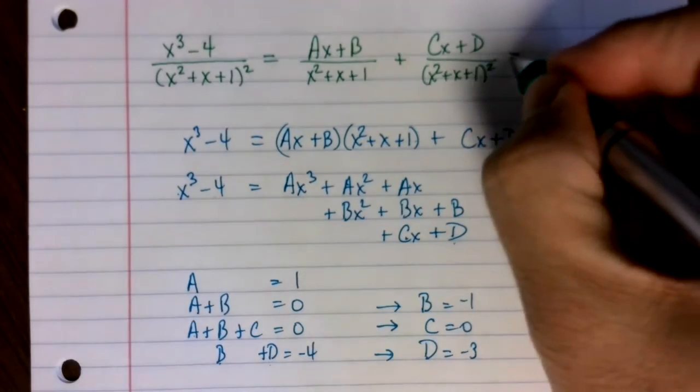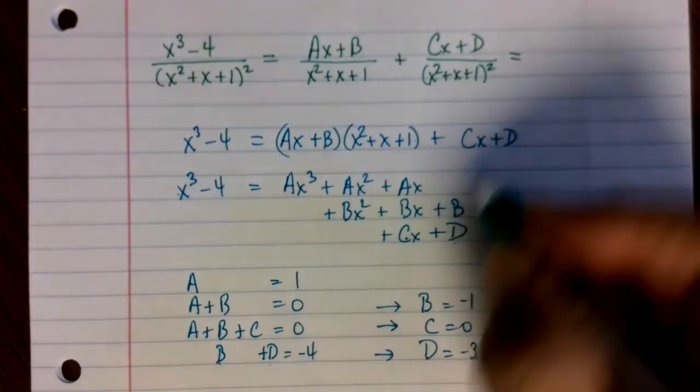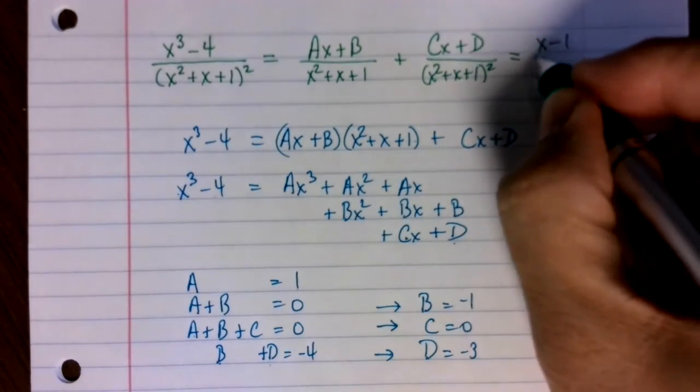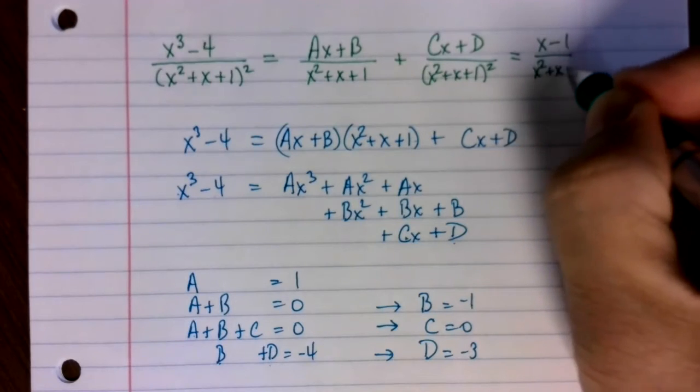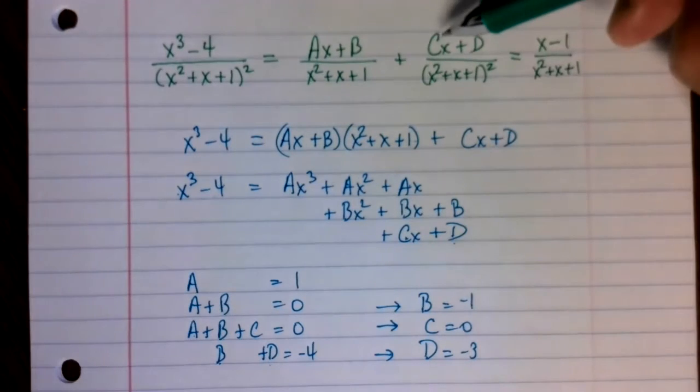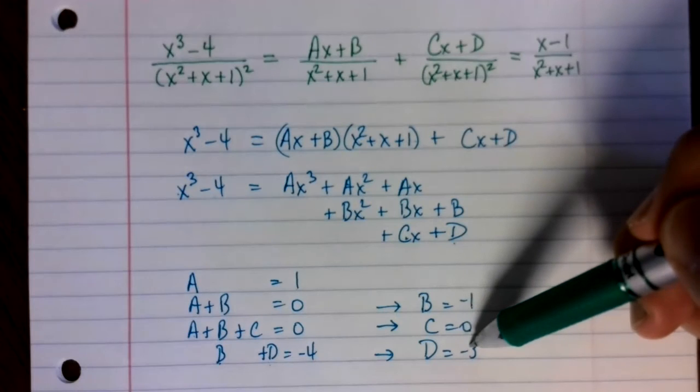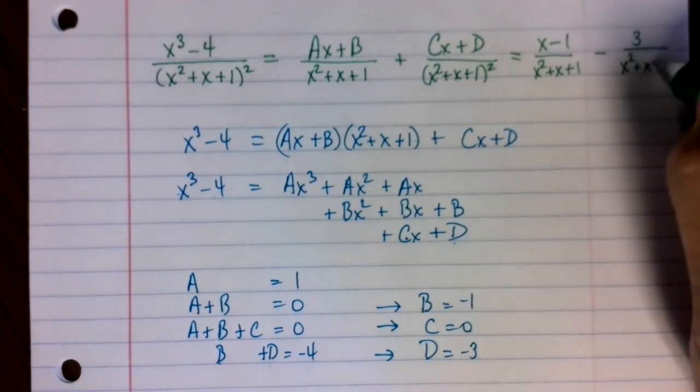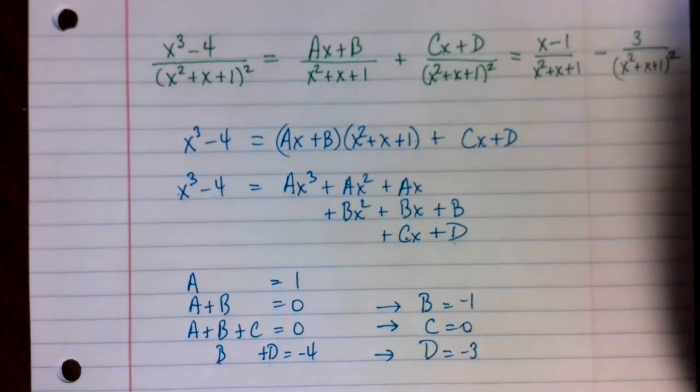And so therefore, we get the decomposition. We have ax, 1x, minus b, or plus b minus 1, over x squared plus x plus 1. Then c is 0 and d is negative 3. So minus 3 over x squared plus x plus 1 quantity squared. And so there is the decomposition of this rational expression.